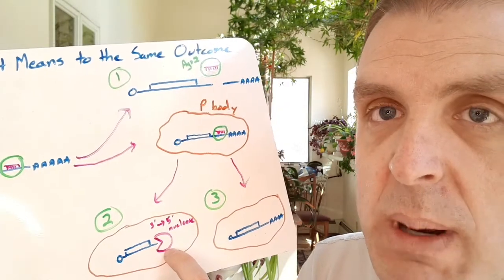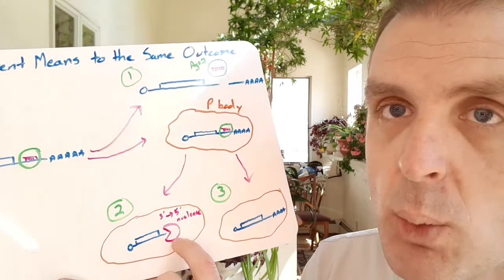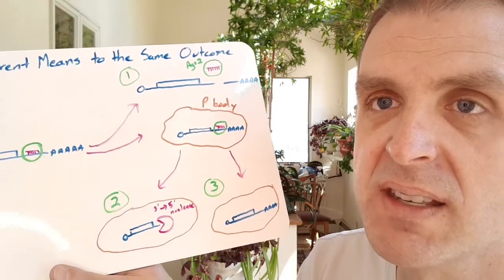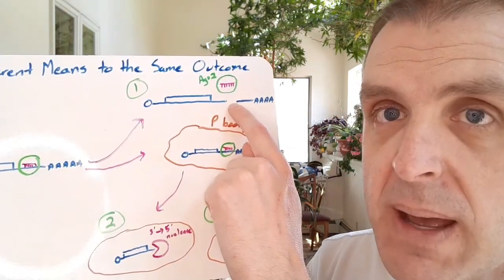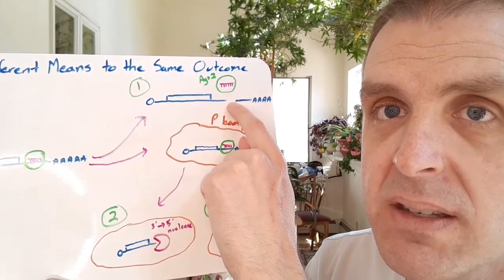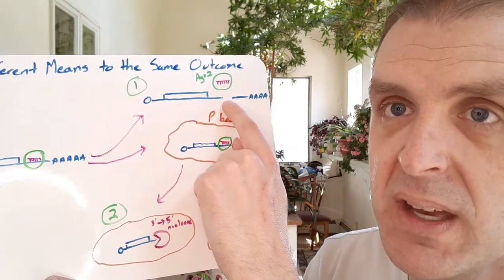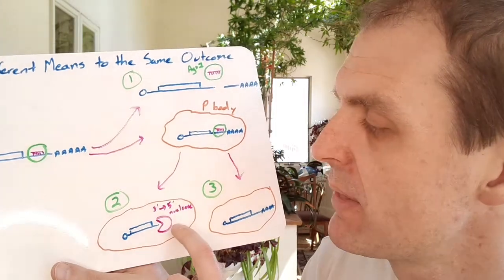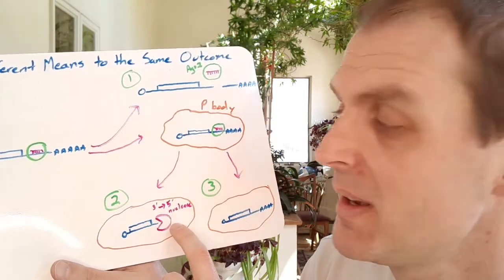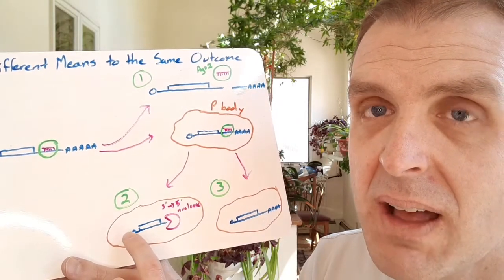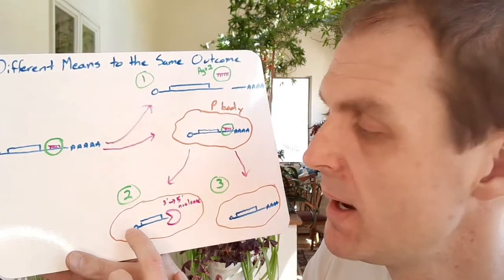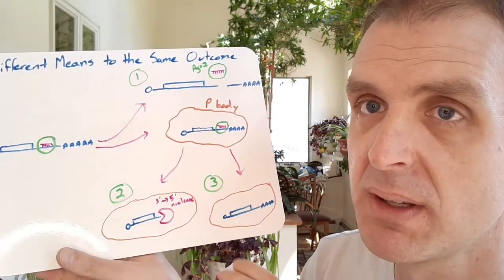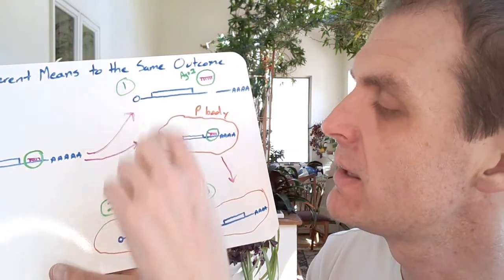One thing that can happen within the processing body is that I've drawn a little Pac-Man shaped protein here, and that is a nuclease. This is a 3' to 5' nuclease, meaning that it first works on chomping off the poly-A tail, and then it works its way down the 3' UTR and causes degradation. So we've got degradation of mRNA here, which was an endonuclease degradation. Endo means within, so the cut is caused within. And then this is called exonuclease because it starts at an end. And if we have a 3' to 5' exonuclease, there is also the possibility of the cell having a 5' to 3' exonuclease that would work from the 5' end. But that's not what you typically see within the processing body. So we've got two different versions of degradation.